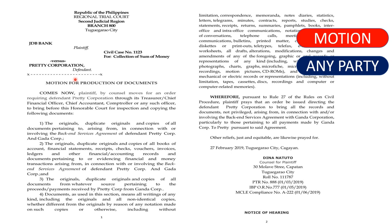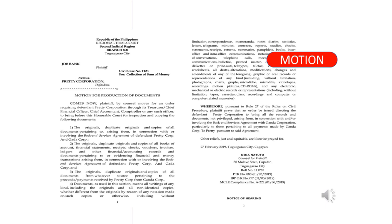But take note — in a criminal case, it is only the accused who can avail this mode of discovery. In a civil case, the plaintiff or the defendant can avail of this mode of discovery. For you to avail Rule 27, you must file a motion, and your motion must comply with the requirements of the rules regarding a motion.